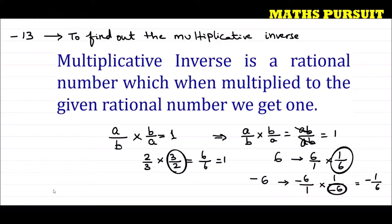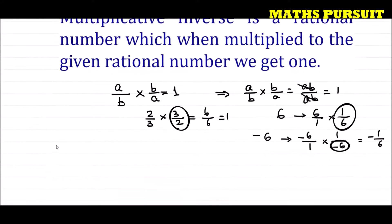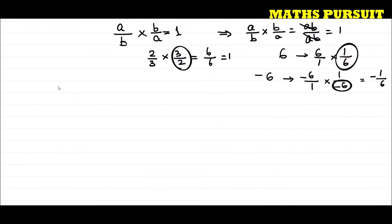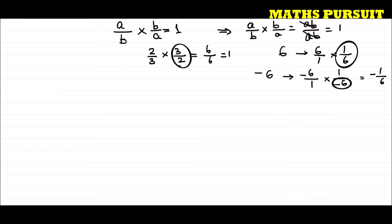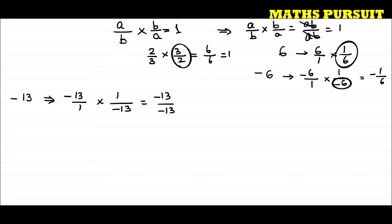Now after understanding multiplicative inverse through those examples, let us find the multiplicative inverse of minus 13. In the same way as we discussed about minus 6, minus 13 can be written as minus 13 upon 1. Hence its multiplicative inverse can be written as 1 upon minus 13. If we multiply, we will get minus 13 upon minus 13, which equals 1. But we cannot put a negative sign in the denominator.